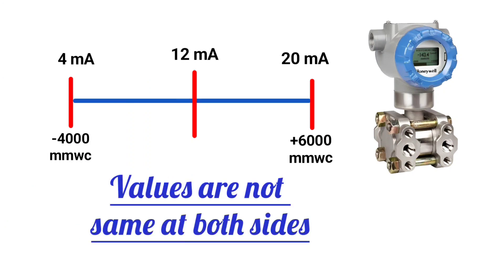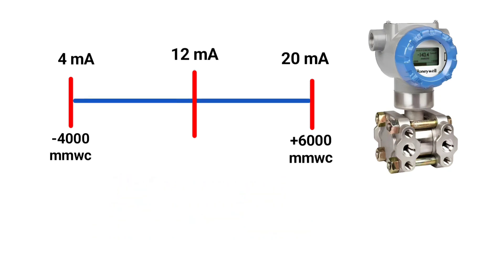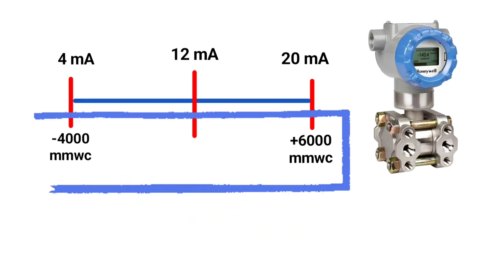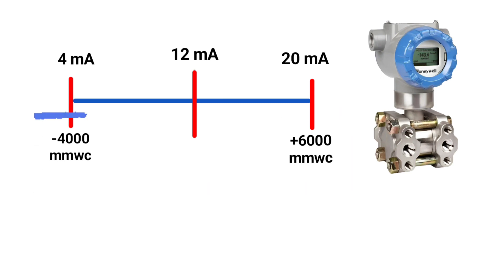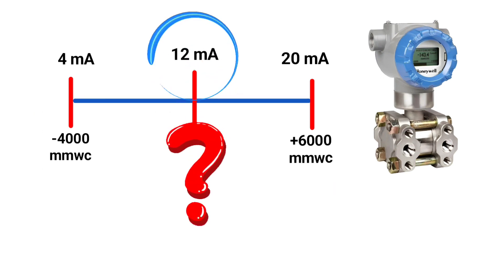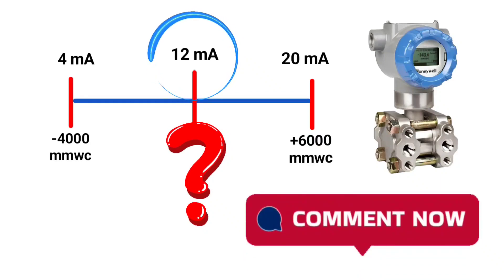So now, you reply friends: for the range minus 4000 mmWC to plus 6000 mmWC, at which value will you get 12 milliampere?